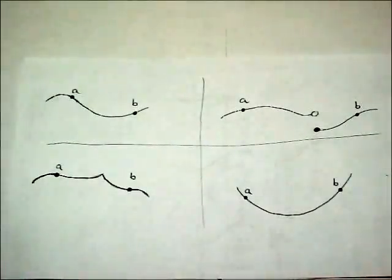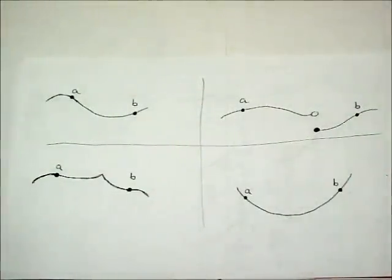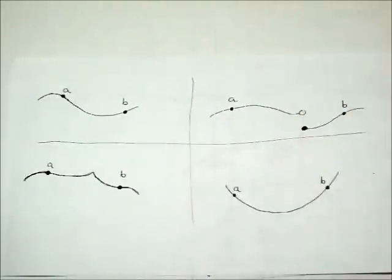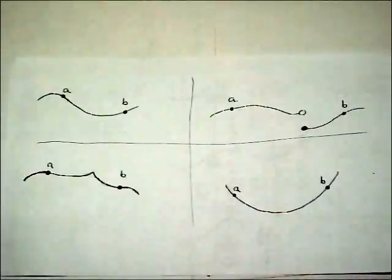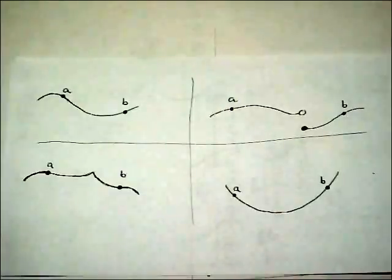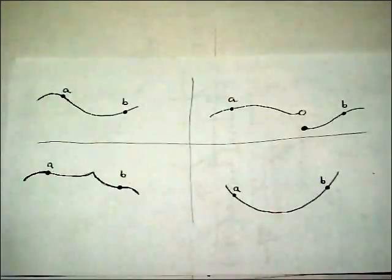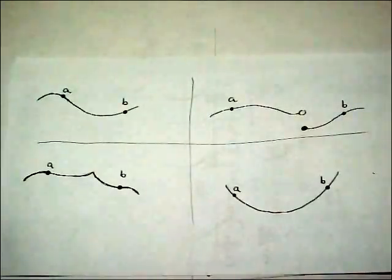Here we have four graphs which we will use to discuss continuity and differentiability. This first graph, for example, is both differentiable and continuous. It's continuous because the function's value as x approaches all values c between a and b is the same from both sides. It is differentiable because the function's derivative is the same as x approaches all values c between a and b from both sides.